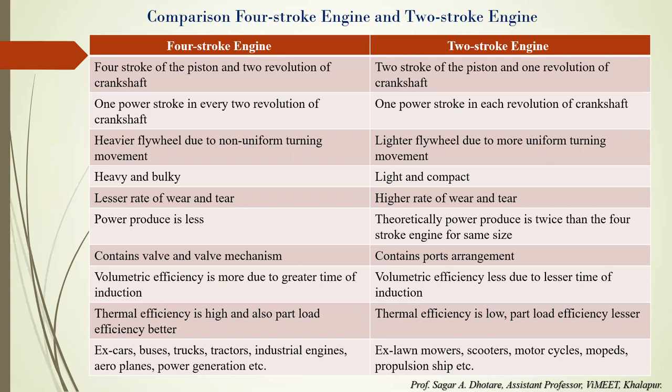Four-stroke engines have lesser wear and tear since the power stroke occurs once every two crankshaft revolutions. In two-stroke engines, there is a continuous power stroke, resulting in a higher rate of wear and tear. Power produced in a four-stroke engine is less; theoretically, a two-stroke engine produces twice the power of a four-stroke engine of the same size. Four-stroke engines use a valve mechanism; two-stroke engines use a port arrangement.